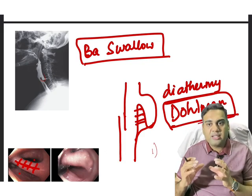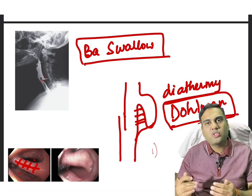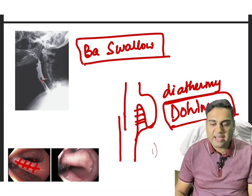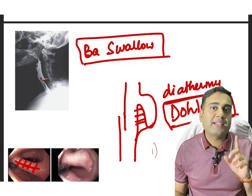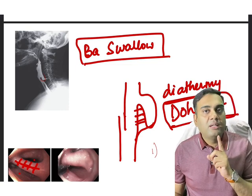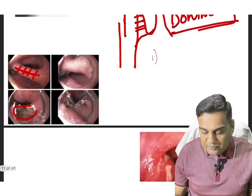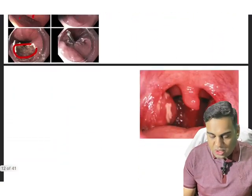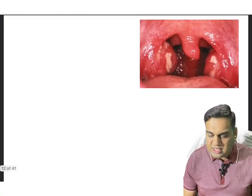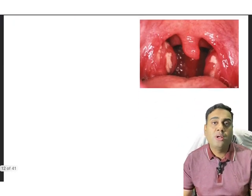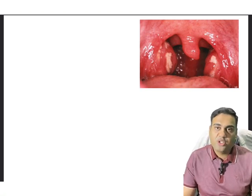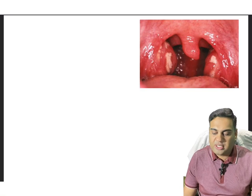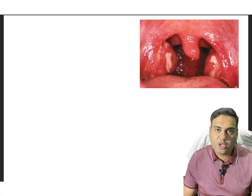Now we have done this disease from the hypopharynx. Let's go into the oropharynx. We saw two important structures in the oropharynx — the palate and the tonsil. Let's see something about the tonsils. Have you ever seen this kind of photograph? I am sure half of you must have had this condition yourself. This is a case of tonsillitis.